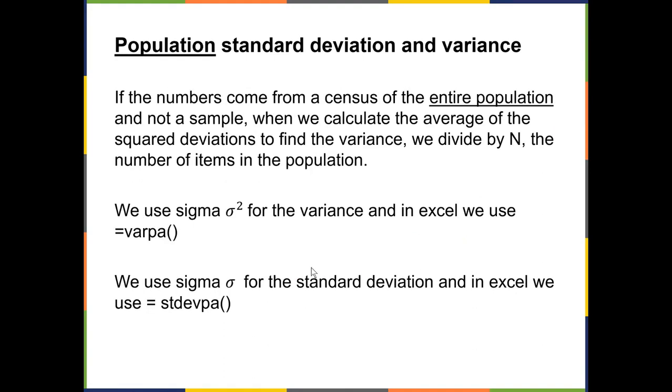For the entire population, like if we know every single data value for the entire population, we would divide by N as we did in our example. We use the symbol sigma squared for the variance, and in Excel, we would use the command variance PA, that stands for population, VARPA. And for the standard deviation, we use the symbol sigma, and in Excel, we use standard deviation with the PA event. Again, most of the time, we're going to be using just the sample standard deviation and variance.